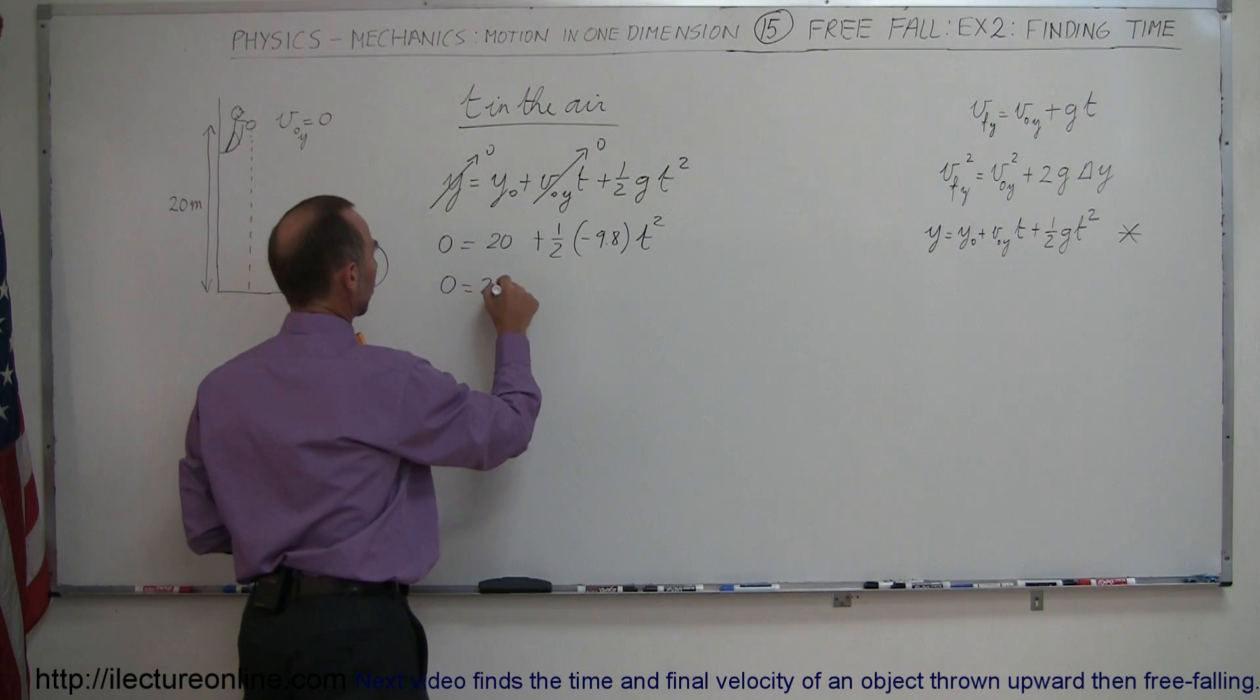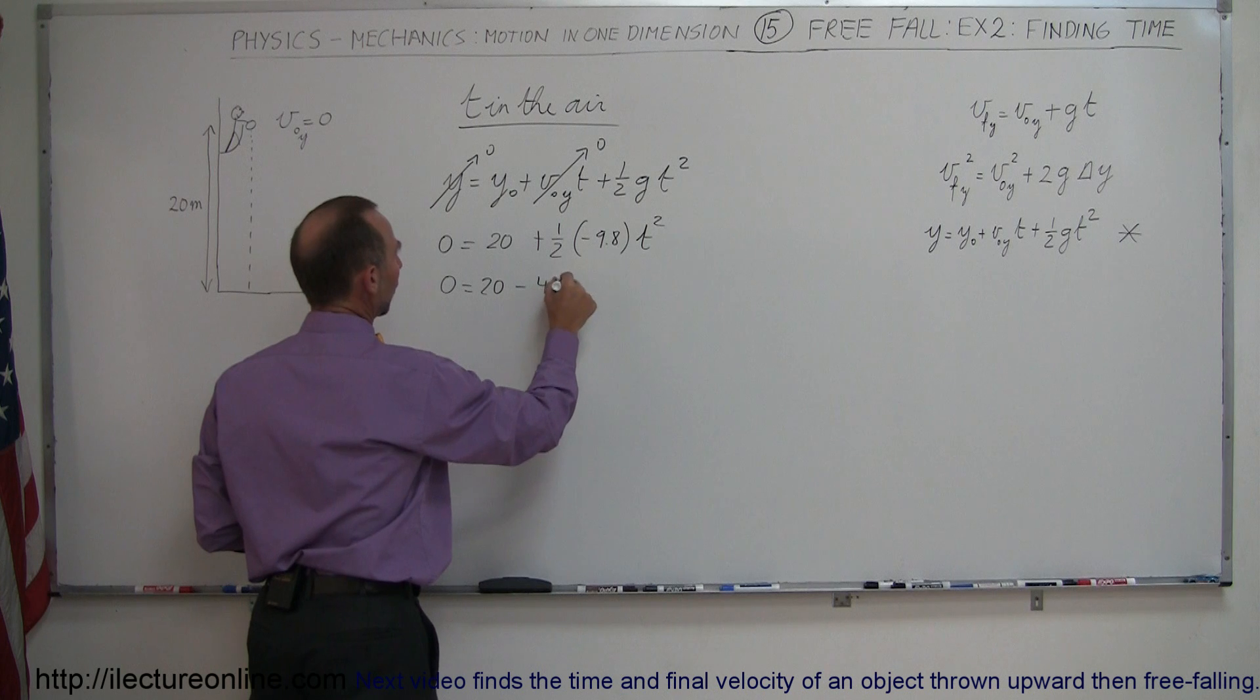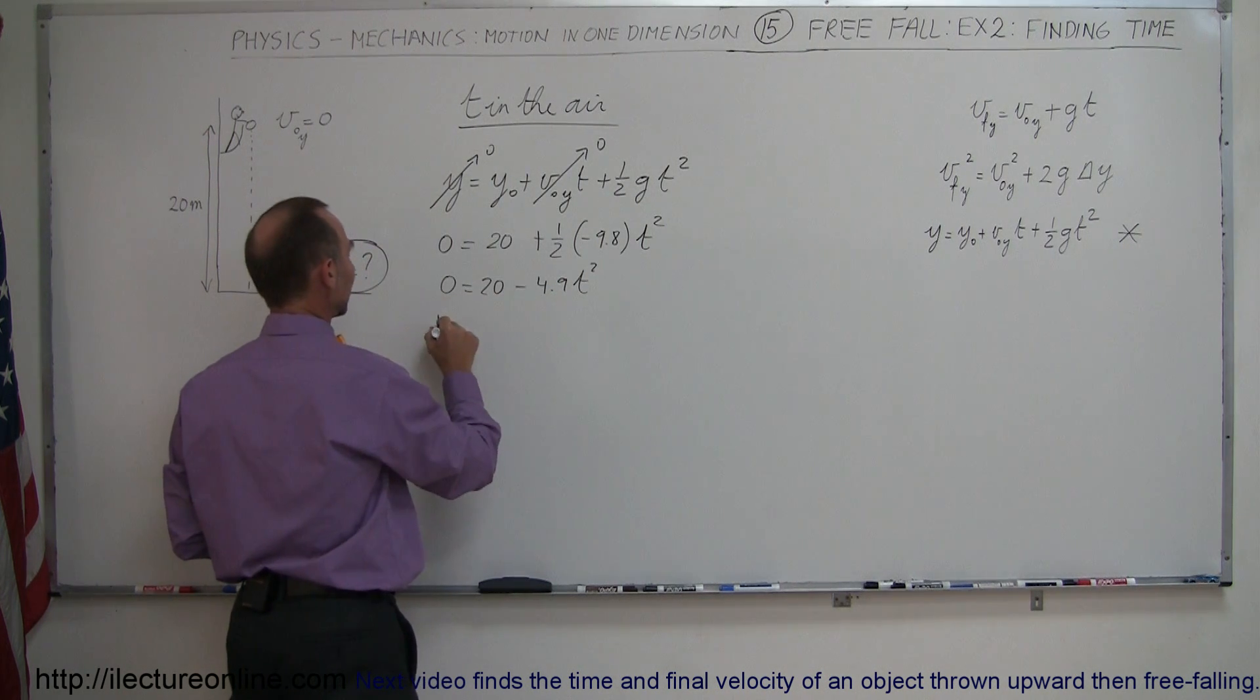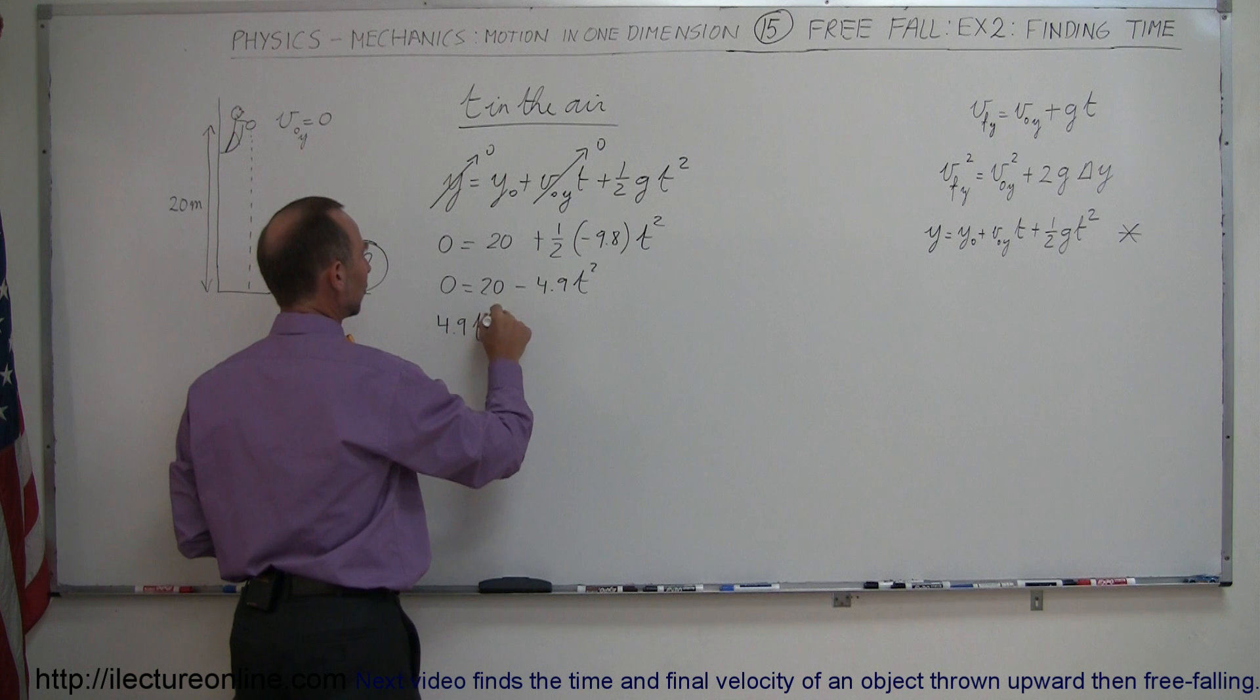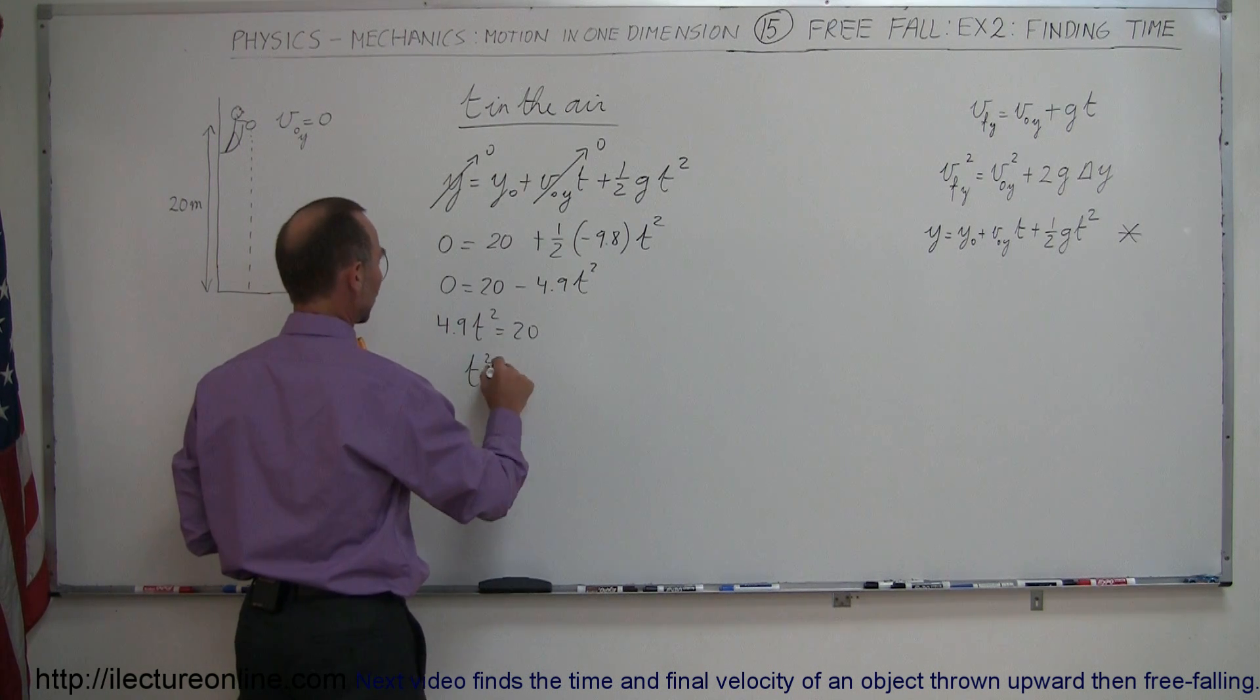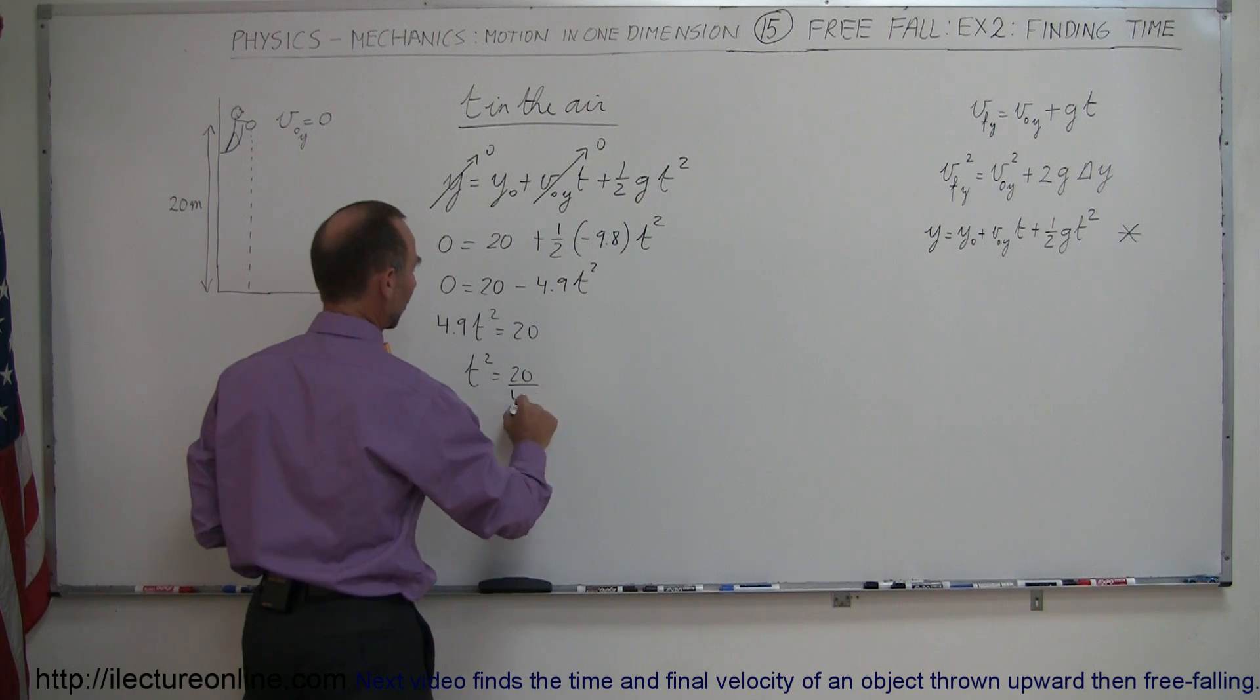Simplifying a little bit, we get zero is equal to 20 minus 4.9 t squared. Moving this term to the left side, we get 4.9 t squared is equal to 20. Dividing both sides by 4.9, we get t squared is equal to 20 divided by 4.9.